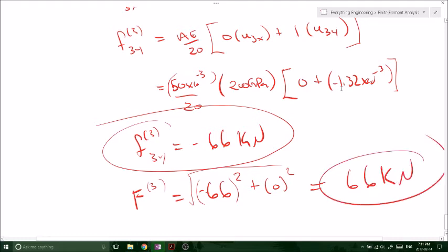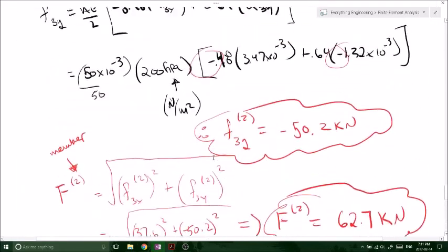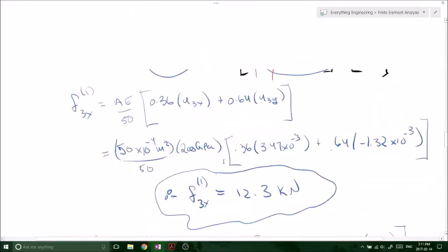And you're just going to get 66 squared, minus 66 squared plus 0 squared square root equals 66 kilonewtons. Boom, that's it.